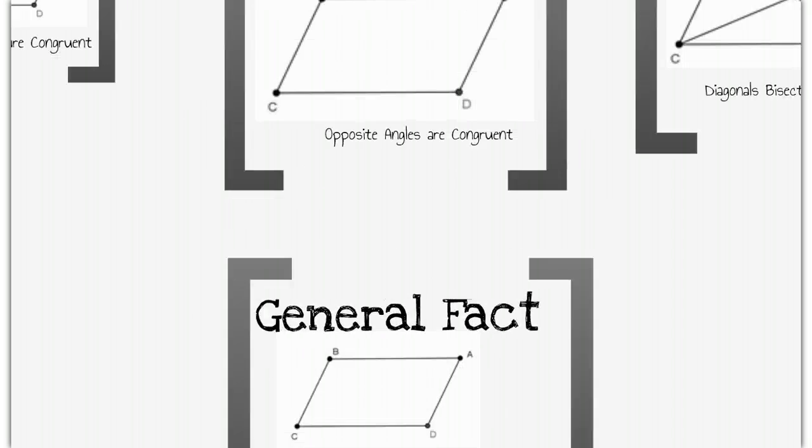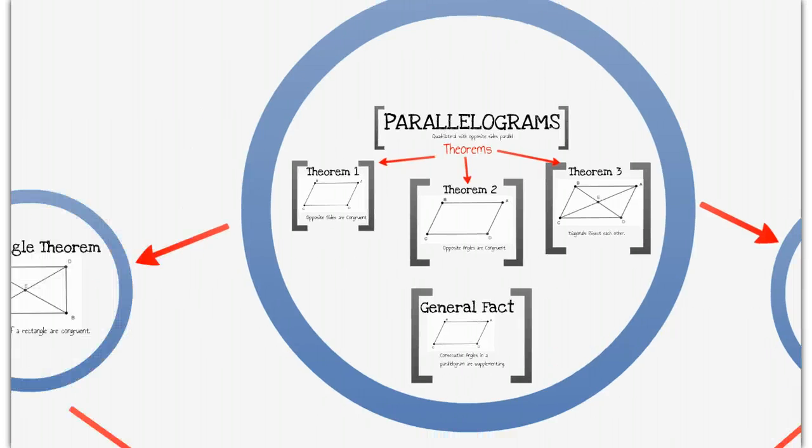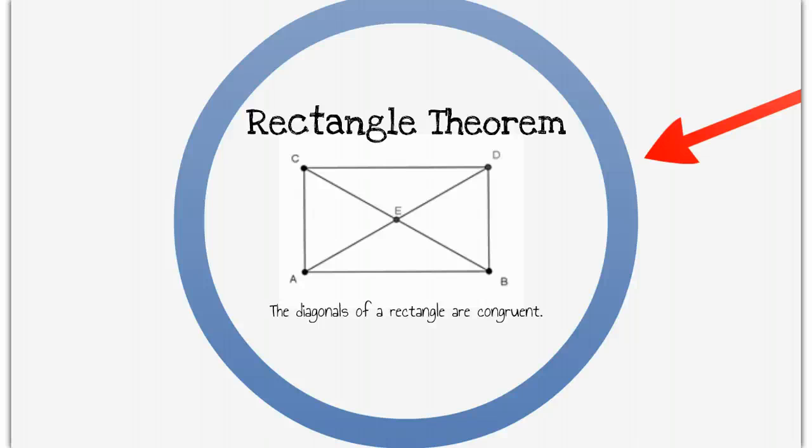All right, moving away from the general parallelogram, what we're going to now talk about is special parallelograms, the first of which is the rectangle. The rectangle theorem is - well first, remember that a rectangle is a parallelogram, so everything about a parallelogram is true about a rectangle: opposite sides are congruent, opposite angles are congruent, which is easy to know because they're 90 degrees, and diagonals bisect each other. But it turns out not only do the diagonals bisect each other, but the diagonals of a rectangle are also congruent to each other.